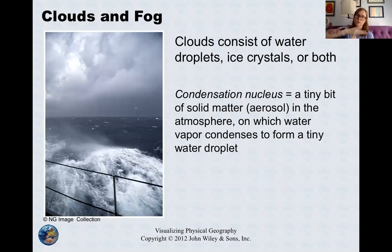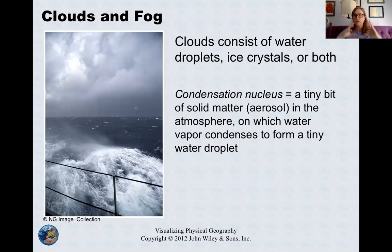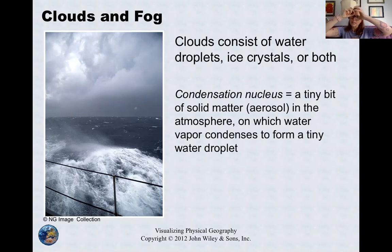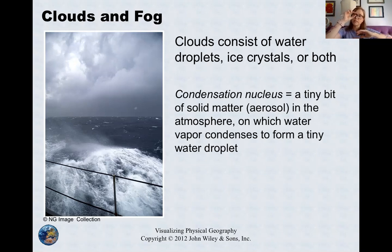You have air parcels that are rising with water vapor in them. When air rises, it condenses. One particular thing you need for a cloud is what's called a condensation nuclei — a little piece of solid matter. It could be an aerosol or a piece of dust, something in the atmosphere that those rising air parcels condense around. You need rising air with water vapor and a condensation nuclei.